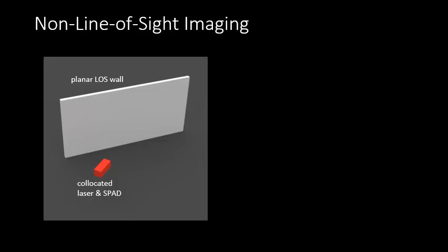By non-line-of-sight imaging, we mainly refer to two scenarios. In the first scenario, we have an active light source and a sensor which are co-located and are looking at some diffuse surface, for example, a wall.